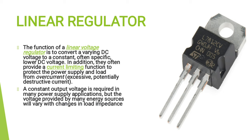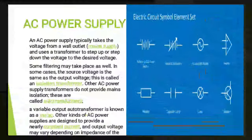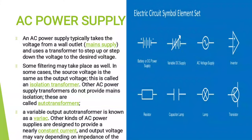A constant output voltage is required in many power supply applications, but the voltage provided by many energy sources will vary with changes in load impedance. An AC power supply typically takes the voltage from a wall outlet and uses a transformer to step up or step down the voltage to the desired voltage. Some filtering may take place via isolation transformer and auto-transformers.